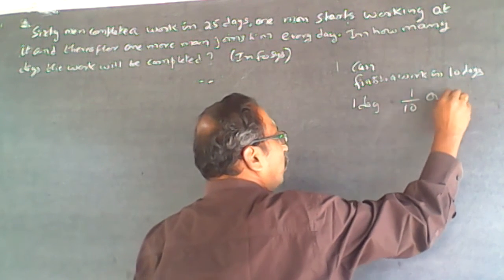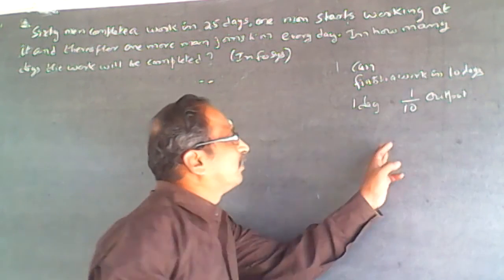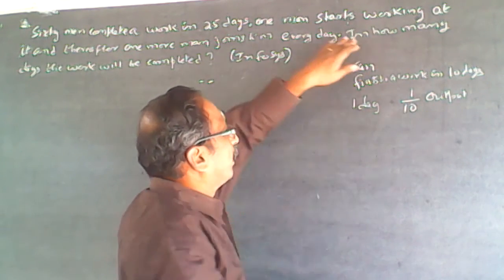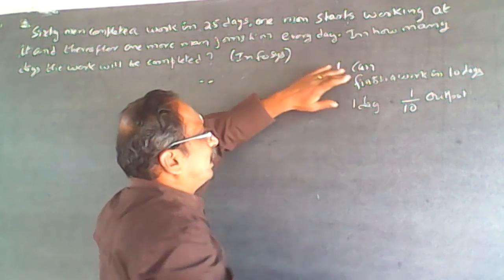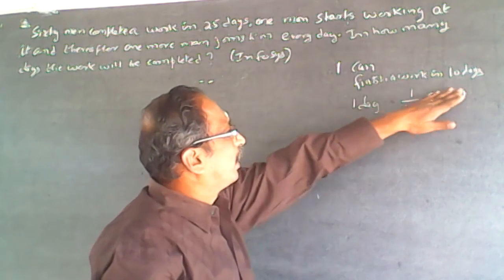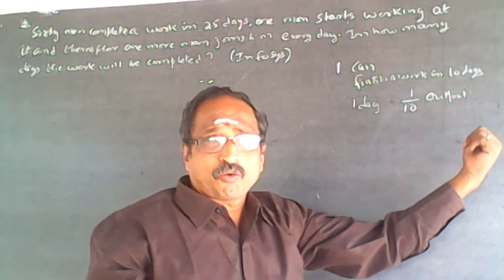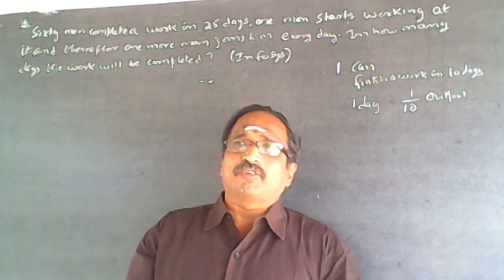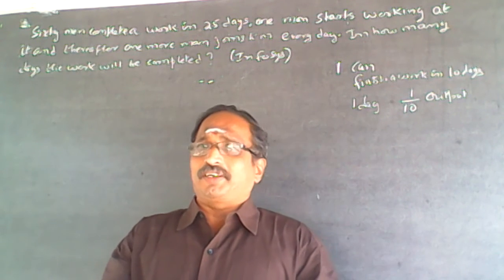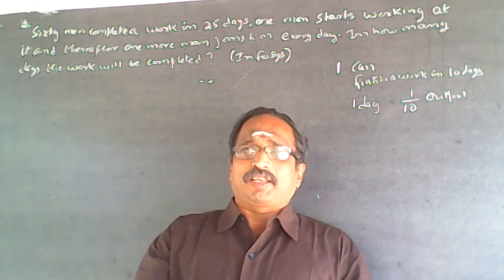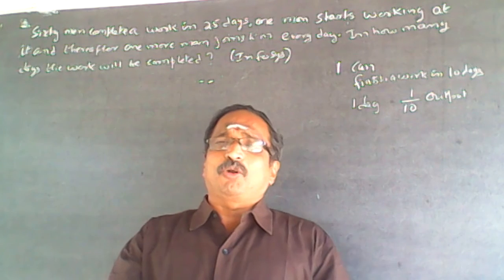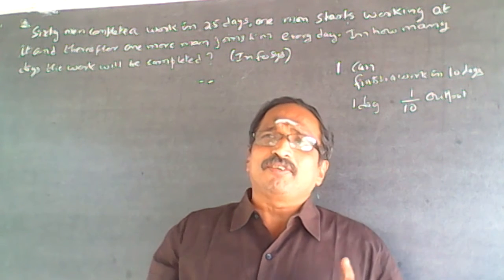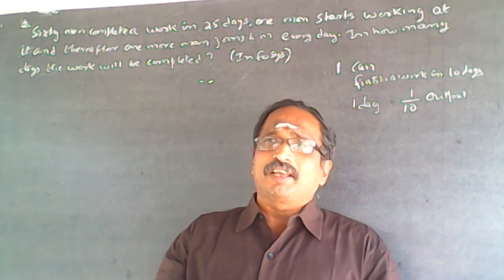1/10 is the daily output. If you can finish a work in 10 days, one day's output will be 1/10. Always consider work as a single unit. When a group of people are working, it is presumed that each one does the same amount of work daily.